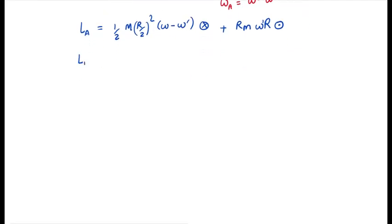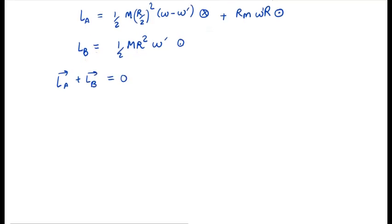Similarly, B's angular momentum is equal to half m r squared. And this angle is omega prime. And this is out of the board. This is total angular momentum. It is conserved. And before it was 0, then it is 0. Now we have into the board and out of the board.